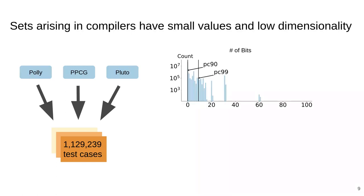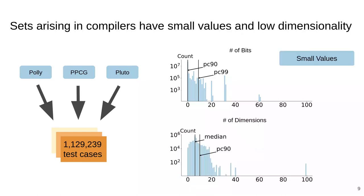For example, we found that the constraint coefficients are sparse. In fact, 90% of the coefficients are just 0. And in general, the values are quite small because we can see that 99% of the values are at most 512. Also, the dimensionality of the sets occurring in these cases is quite small. In fact, 90% of these sets have dimensionality at most 10.